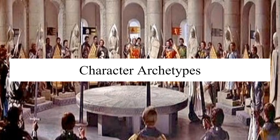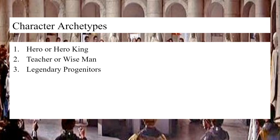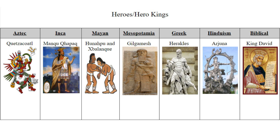Next, we're going to look at character archetypes, primarily three: the hero or hero king archetype, the teacher or wise man archetype, and the legendary progenitor or legendary ancestor archetype. To make this analysis easier, I've put the characters side by side denoting which religion or mythology they've come from. For the hero archetype: Quetzalcoatl was often depicted as a hero king; Manco Cápac was a legendary Inca king; Gilgamesh and David are legendary kings of Uruk and Israel respectively; and Hunahpu, Xbalanque, Heracles, and Arjuna are legendary heroes in each of their mythology's rites.